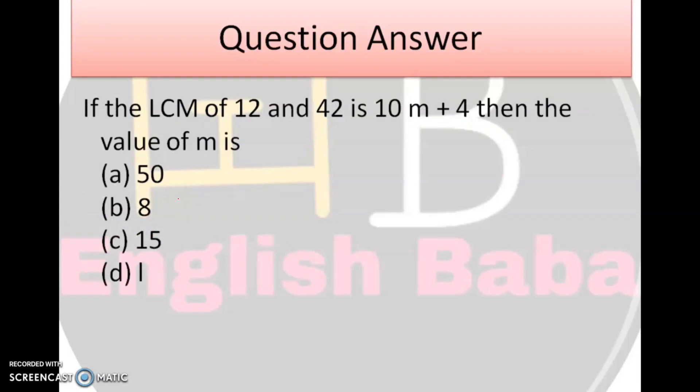Next question. If the LCM of 12 and 42 is 10m plus 4, then the value of m is 58, 15, 8, 1. Ab aap LCM nikaaliye 12 and 42 ka. Jo bhi aap ka answer aega, you will have to write as equal to 10m plus 4. Solve the quadratic equation and you will get the answer as option number B, 8.